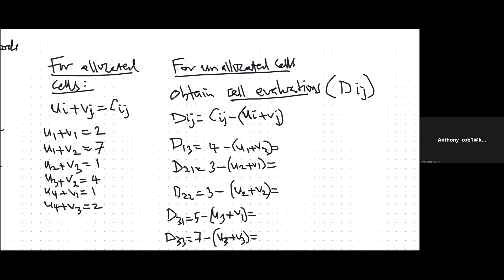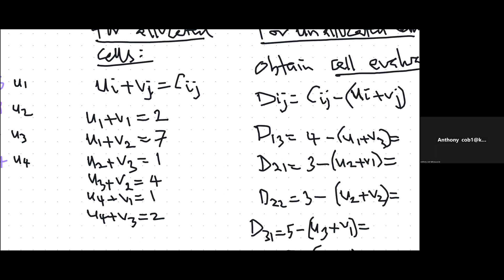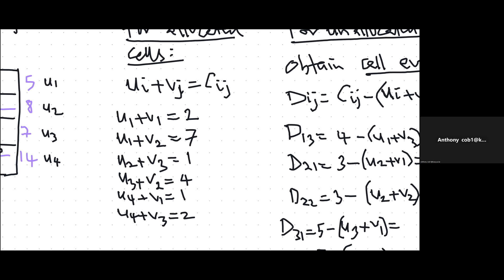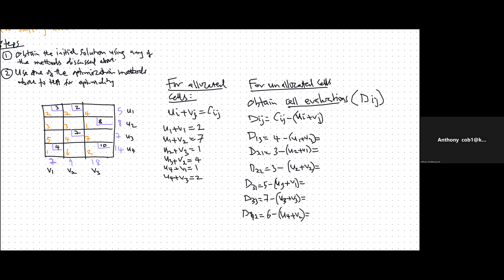For example, the first unallocated cell is in row 1, column 3, so D13 equals 4 minus (U1 plus V3). The next unallocated cell is row 2, column 1, so D21 equals 3 minus (U2 plus V1). We continue for all unallocated cells up to D42, which equals 6 minus (U4 plus V2).